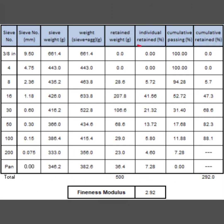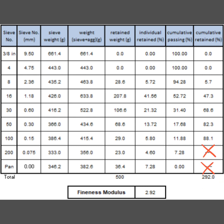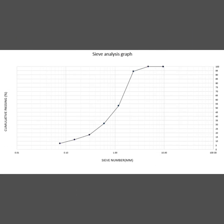To determine the percentage of individual aggregate retained on each sieve, divide the weight of aggregate on each sieve by the total weight of the sample — which in our case is 500 grams — and multiply by 100. We can also find the fineness modulus by summing the cumulative percentage retained on each sieve, except for the number 200 sieve and the pan, and dividing by 100. To visualize the particle size distribution, a graph can be created by plotting the sieve size in millimeters on the x-axis and the cumulative percentage of aggregate passing through each sieve on the y-axis. This value is obtained by subtracting the percentage retained on each sieve from 100.